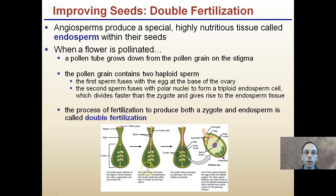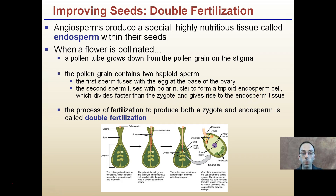Double fertilization produces a special, highly nutritious tissue called the endosperm for the seeds. When a flower is pollinated, the pollen tube grows down from the pollen grain on the stigma. The pollen grain contains two haploid sperm. The first sperm fuses with the egg at the base of the ovary. The second sperm fuses with the polar nuclei to form the triploid endosperm cell, which divides faster than the zygote and gives rise to the endosperm tissue — the food region for the seed. This process of fertilization producing both zygote and endosperm is called double fertilization.